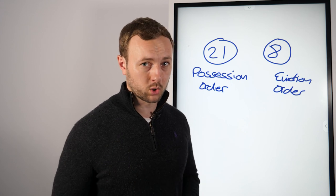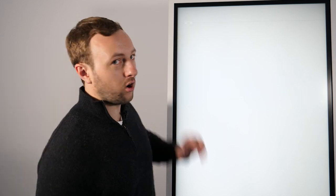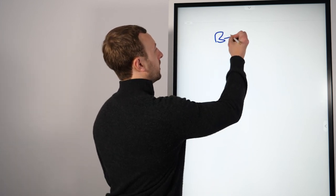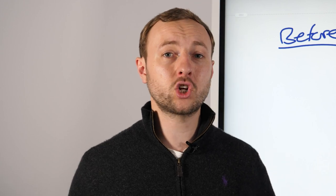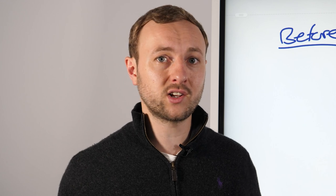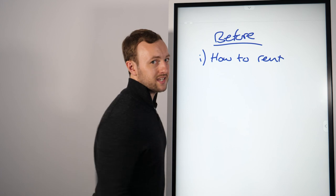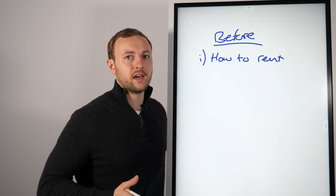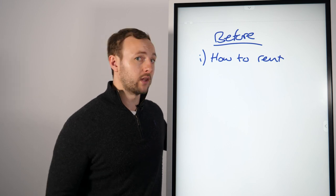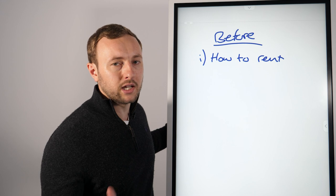Before you actually get a tenant in, in the UK there are several documents you need. This is really important because if they've moved in and you haven't given them the right documentation, it's going to cause issues when you need to get them out of the property. The first one is a How to Rent guide. It's a government document — you have to give them the most up-to-date one, available on the government website. It covers whether they have the right to rent and more.